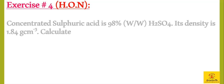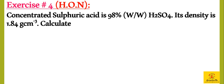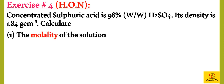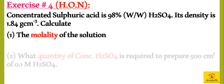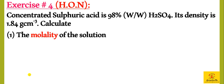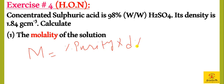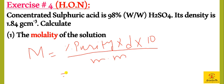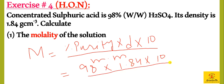Next is exercise question number 4, a high order numerical. Concentrated sulfuric acid is 98% weight by weight. Its density is 1.84 grams per cubic centimeter. Calculate molality and molarity of this solution. Using the direct method: percentage purity times density times 10 divided by molar mass — 98 times 1.84 times 10 divided by 98 equals 18.4 molar.